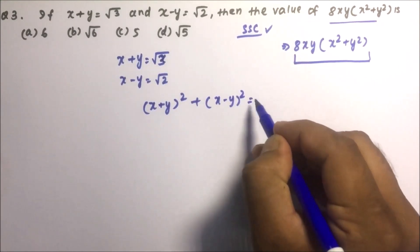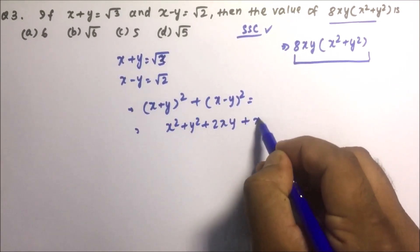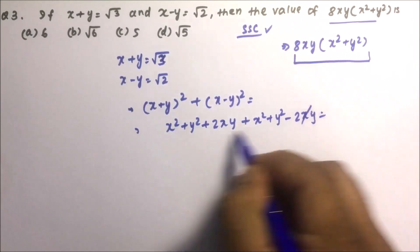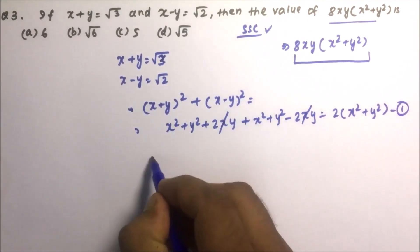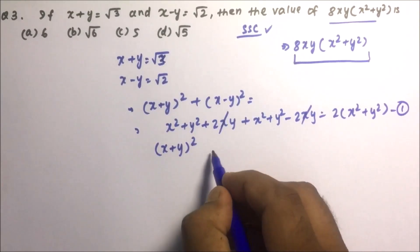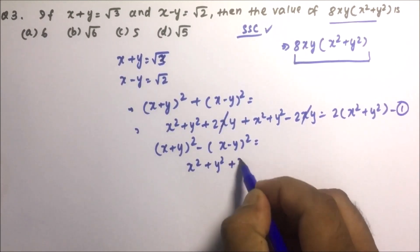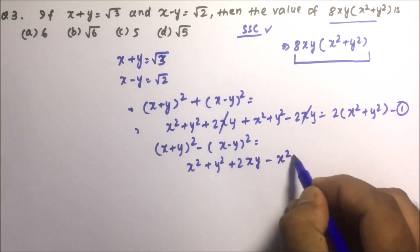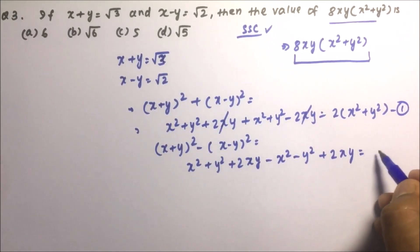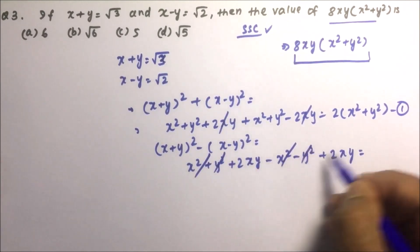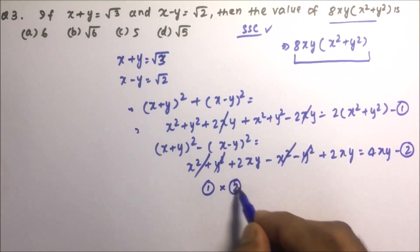First, we use: (x + y)² + (x - y)² = (x² + y² + 2xy) + (x² + y² - 2xy) = 2(x² + y²). This is equation 1. Second, we subtract: (x + y)² - (x - y)² = (x² + y² + 2xy) - (x² + y² - 2xy) = 4xy. This is equation 2.